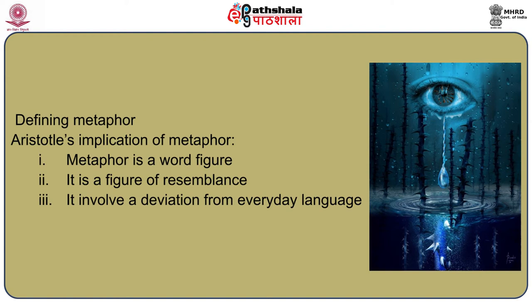This definition subsumes metonymy and synecdoche as well. There are three implications of Aristotle's definition: one, metaphor is a word figure; two, it is a figure of resemblance; three, it involves a deviation from everyday usage. The definition subsumes metonymy and synecdoche with the property of transference of meaning being common to all three figures. Most modern definitions of metaphor focus essentially on resemblance or similarity and often club it with simile. Where a simile compares two things, a metaphor directly equates them and does not use 'like' or 'as.' Metaphor is thus reduced to a figure of implied comparison as against simile, which has explicit comparison. And we will see that metaphor involves similarity but involves much more as well.